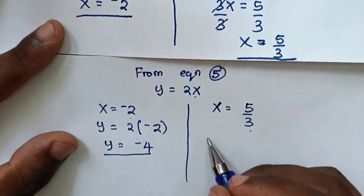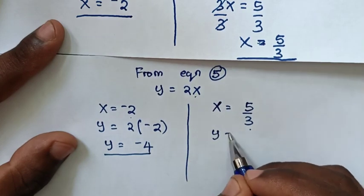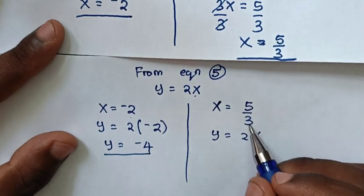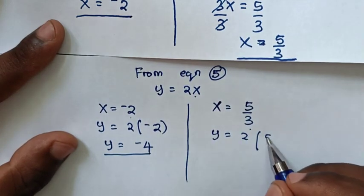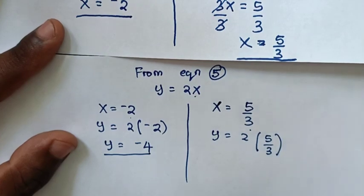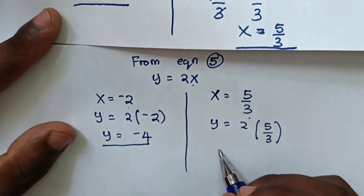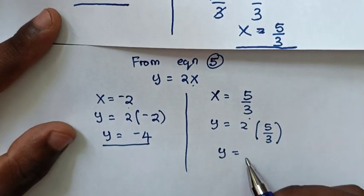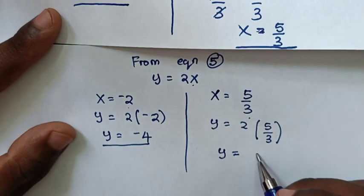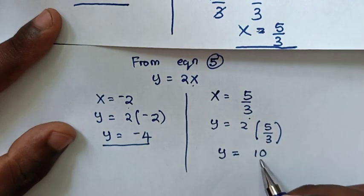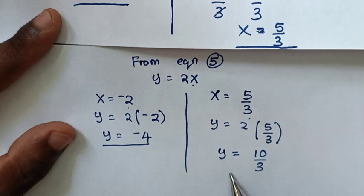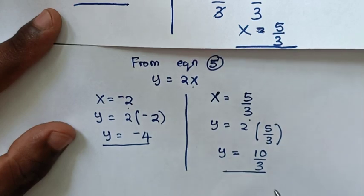And the value of x which is 5 over 3, we substitute into y equals 2x. So y is equal to 2 times 5 over 3. Then y is equal to 10 over 3.